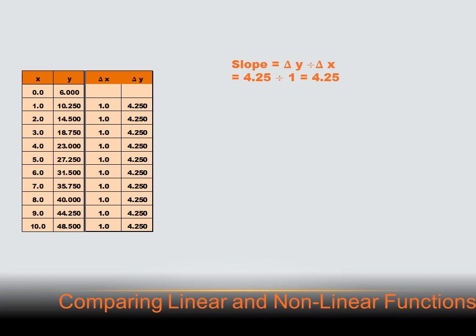Here's another way: try to create an equation and see if it's in slope-intercept format. First, figure out the slope — change in y divided by change in x — so 4.25 divided by 1 gives a slope of 4.25. Then find the y-intercept, which is where x equals 0, giving a y-intercept of 6. So the function can be written as y equals 4.25x plus 6. Since it can be written in slope-intercept format, it's a linear function.